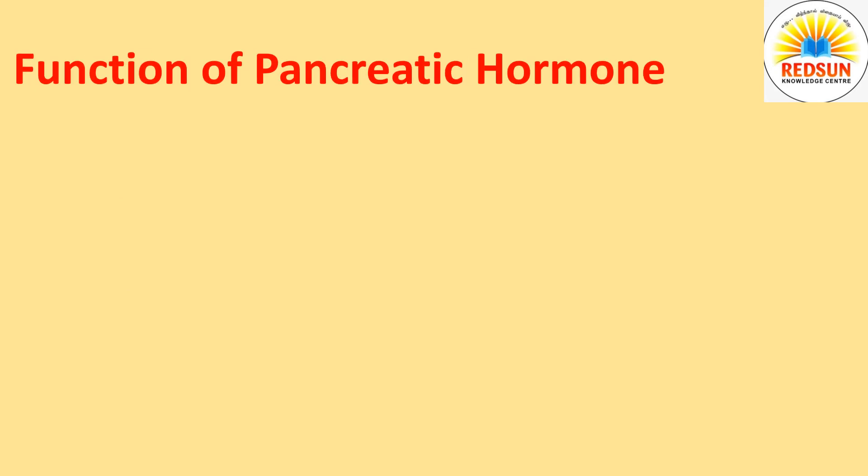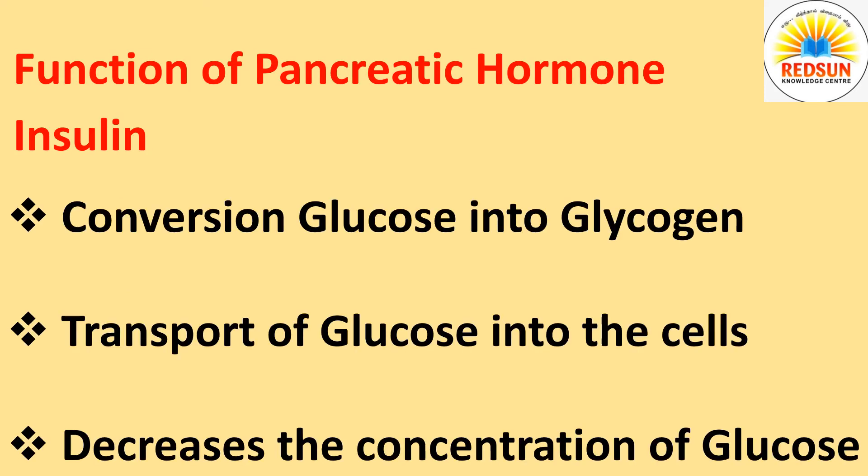Functions of pancreatic hormones — Insulin. Insulin helps in the conversion of glucose into glycogen, which is stored in liver and skeletal muscles. It promotes the transport of glucose into the cell and it decreases the concentration of glucose in blood.